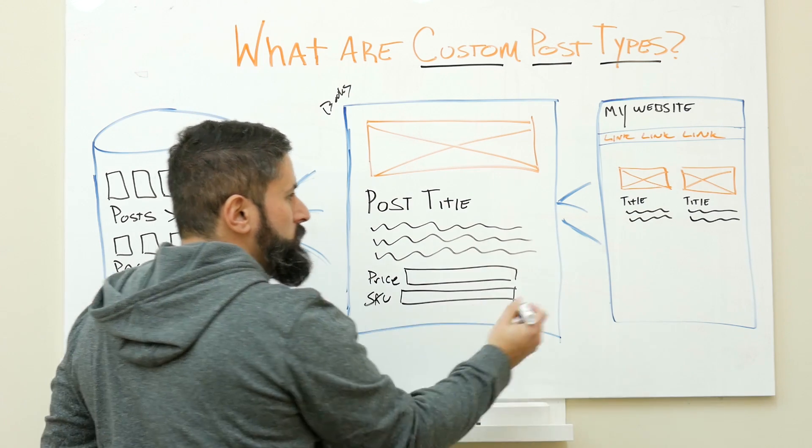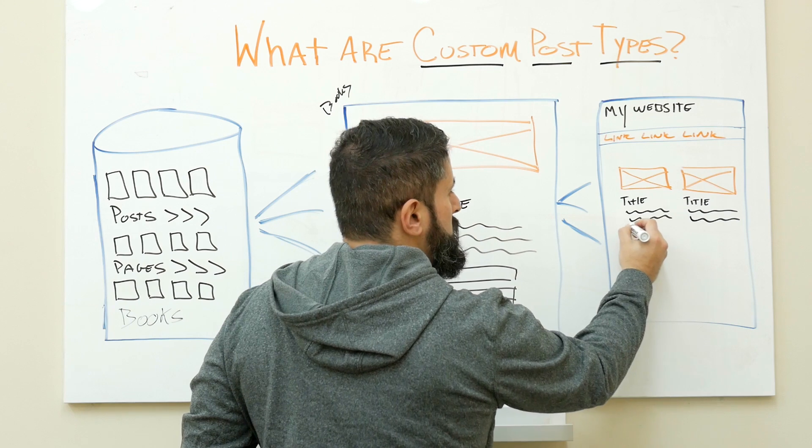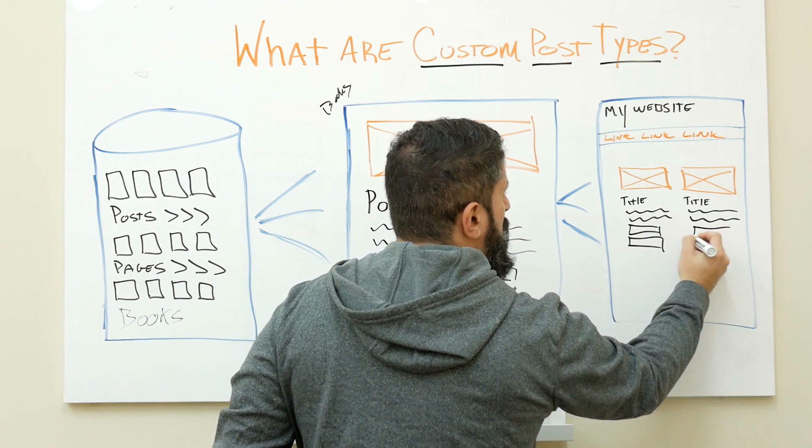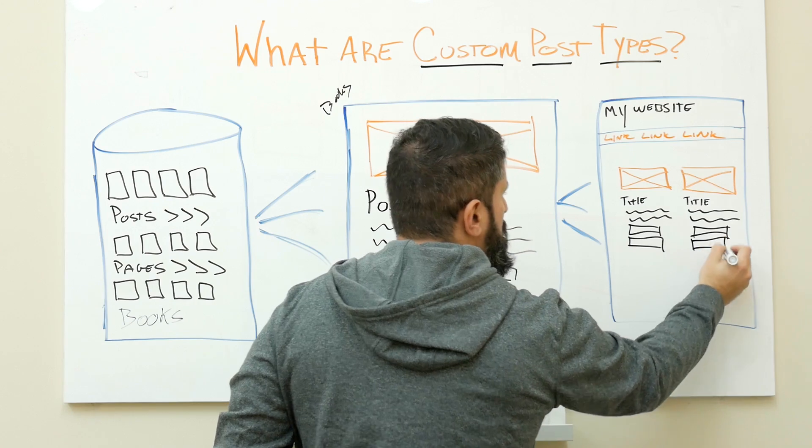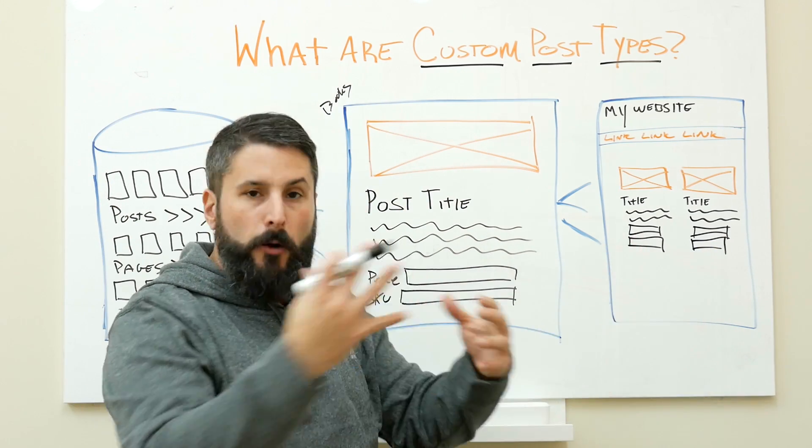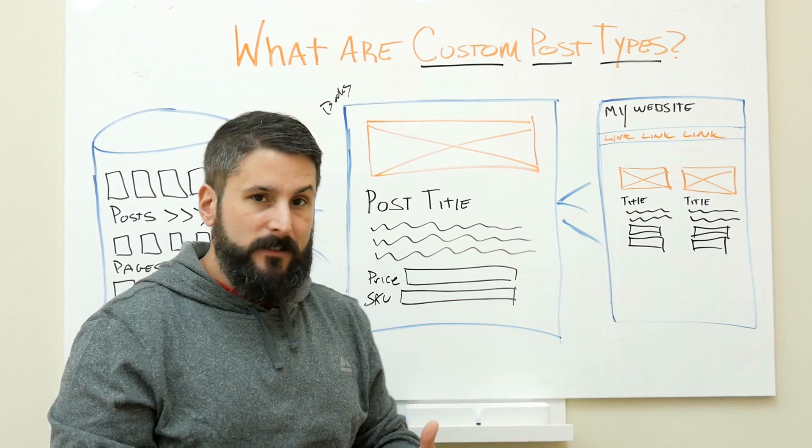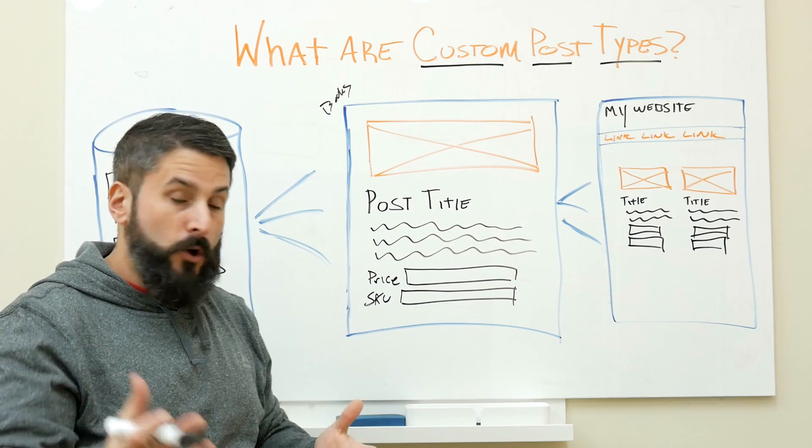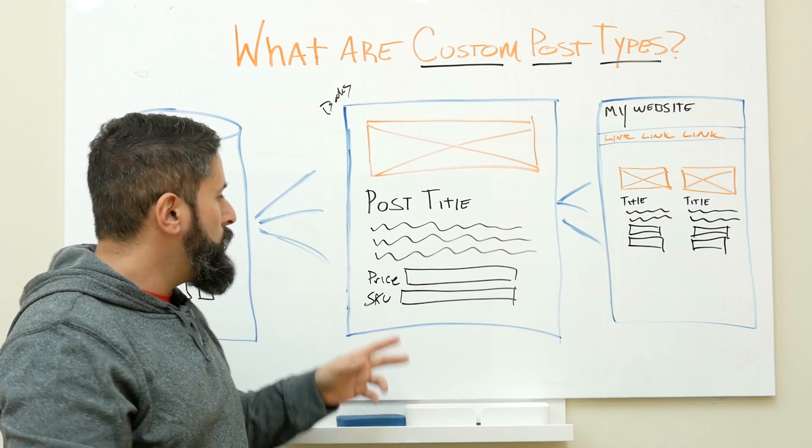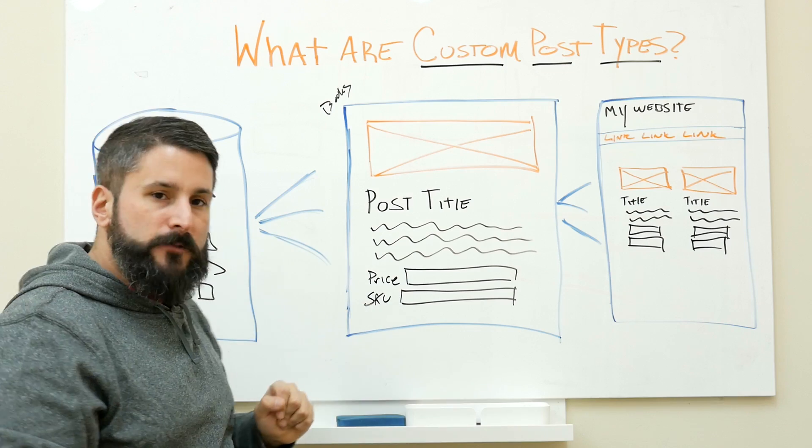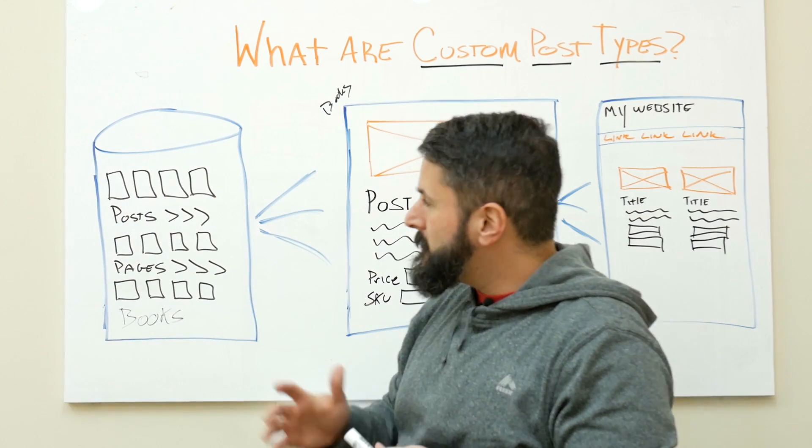With custom post types, when you create these, typically what you're doing is telling WordPress, yeah, I also want those custom fields on the front end of my website. So when they click on an item over here, a product, a book, a real estate listing, it pulls this up. It pulls up your single view, what's known as the single in WordPress, with not only that content but these fields. That's what makes custom post types so darn powerful.